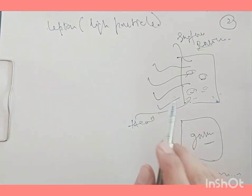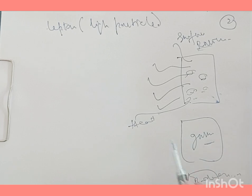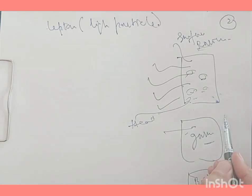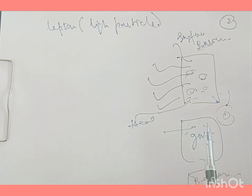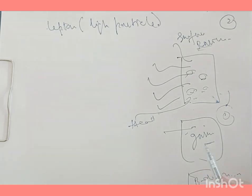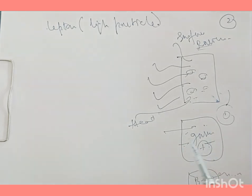We can also produce electrons by ionizing a gas. When a highly energetic particle collides with an atom of gas, the electron revolving around the nucleus is knocked out, leaving a positively charged atom, and the electrons knocked out can be extracted using suitable means. Finally, we can have electrons from beta decay.